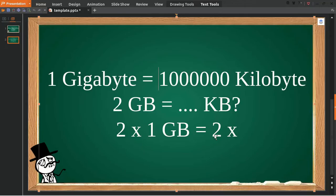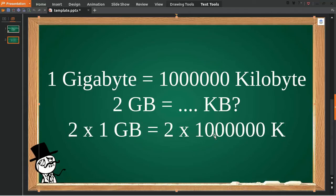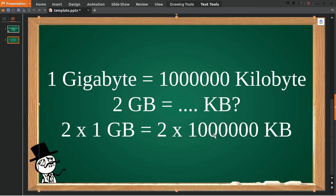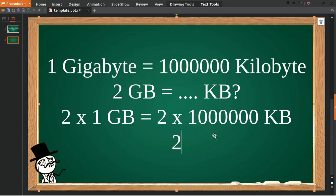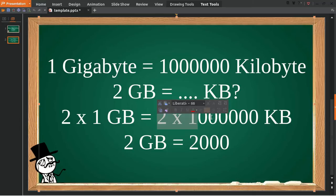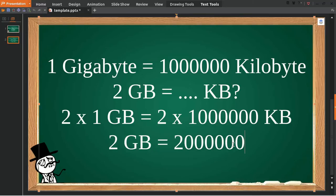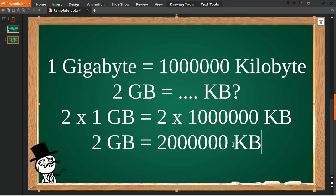We multiply it with one million kilobytes. Now we have two gigabytes is equal to two million. Two multiplied by one is two, and we have the million, so two million kilobytes. That's the answer to the question.